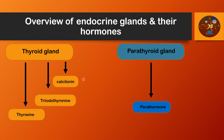Next comes the parathyroid gland. It controls calcium ion concentration in the extracellular fluid by regulating absorption of calcium from the gut, excretion of calcium by the kidney, and release of calcium from the bone. So it is also important regarding the metabolism and the absorption and release of calcium.